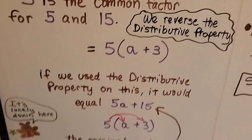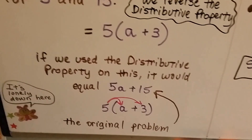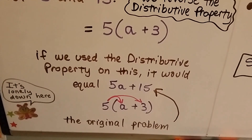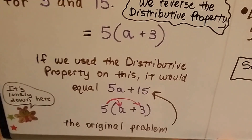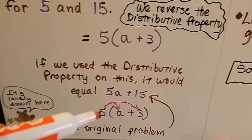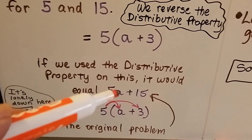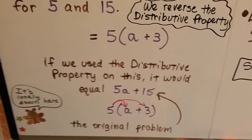If we use the distributive property on this now, it would equal the 5a plus 15 that we started with. We get right back to our original problem.